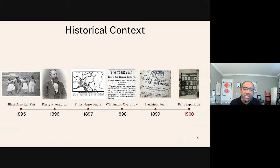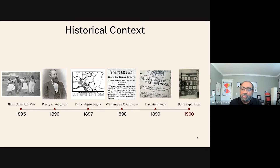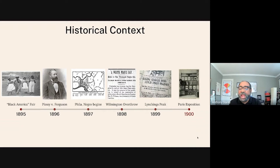They killed an estimated 60 to 300 people. In 1899, the year before the Paris Exposition, lynchings peaked in Georgia — there were 27, including the horrific lynching of Sam Hose in April of that year. Between 1890 and 1900, Georgia averaged more than one mob killing per month. Black lives really didn't matter in those days.